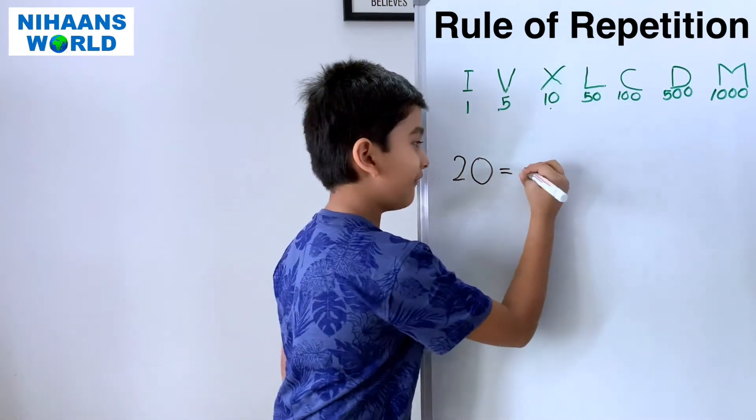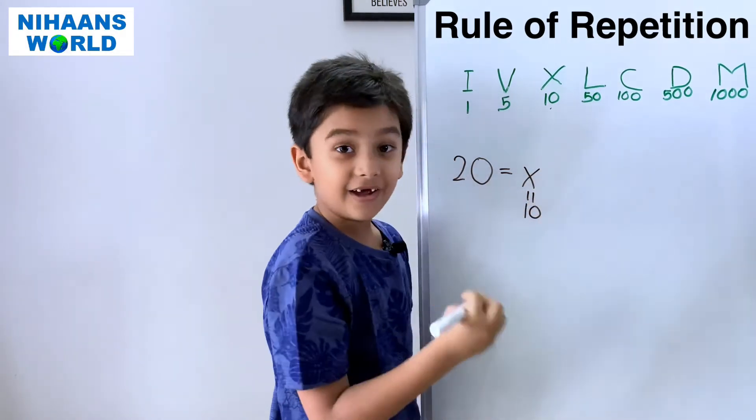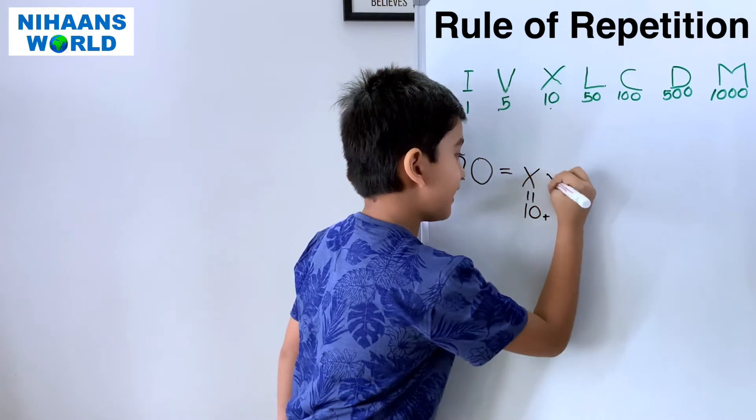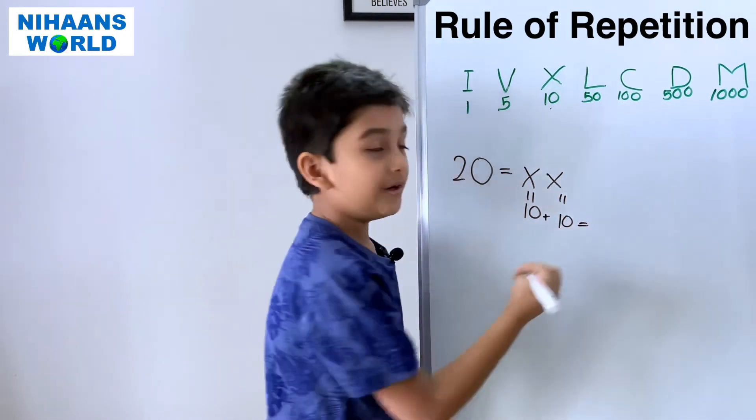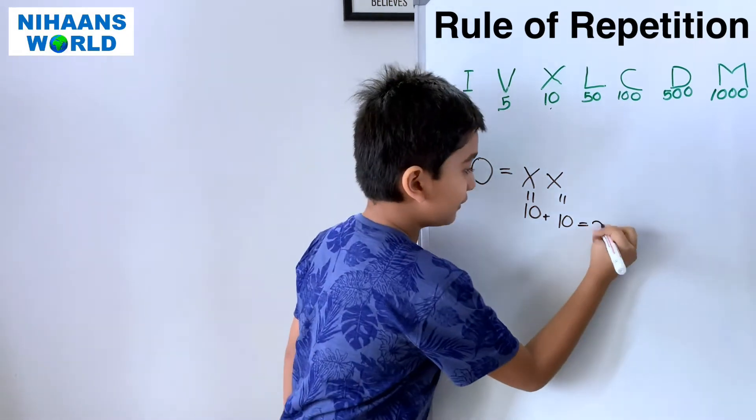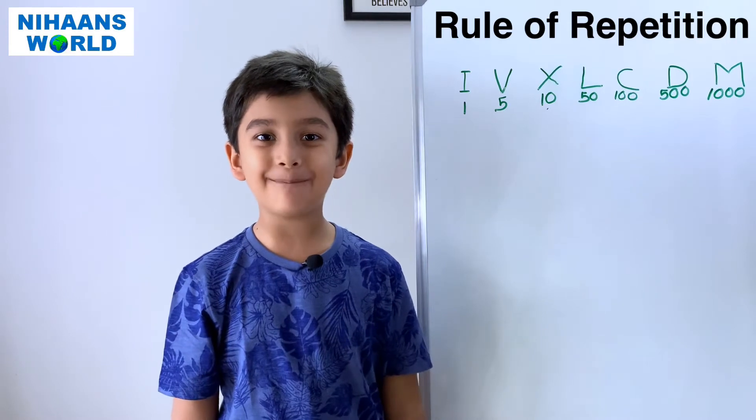So, X is equal to ten. Another X is equal to another ten. So, ten plus ten is equal to twenty. Let's see one more example.